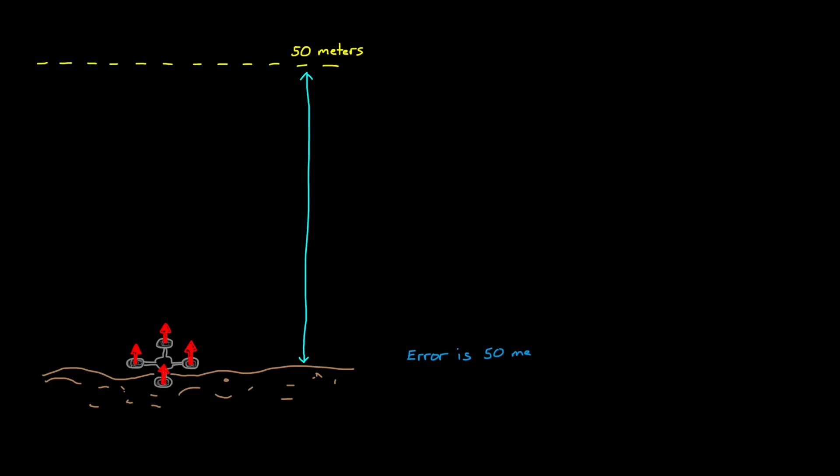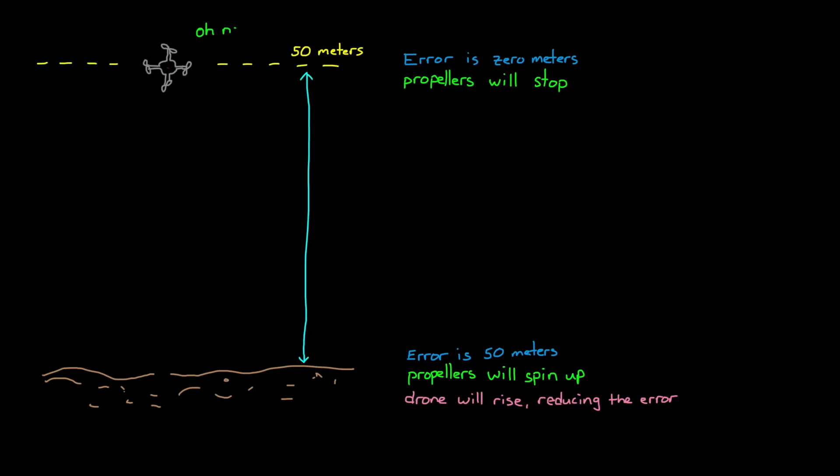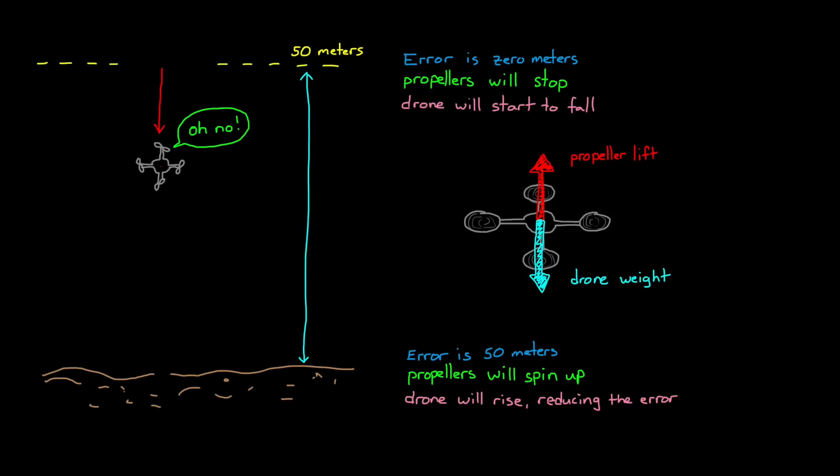Well, when the drone is on the ground, there's an error of 50 meters, which would generate a large propeller speed, causing the drone to lift off and start to rise, reducing the error. So far, so good. But let's imagine the drone was able to rise all the way to 50 meters. What would happen now? Well, the error would drop to zero, since the command and the output are both 50 meters. This would then shut off the propellers, lift would stop, and the drone would fall back to earth. There is a certain propeller speed where the lifting force is exactly equal to the weight of the drone. And at that speed, the drone will hover.